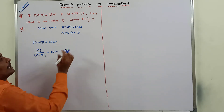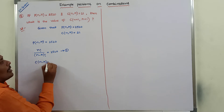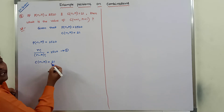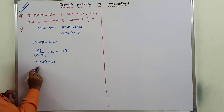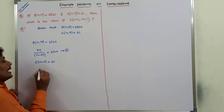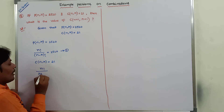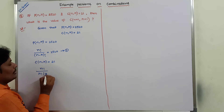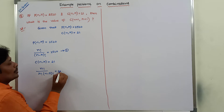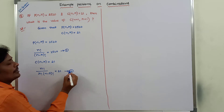Next, C(n, r) is equal to 21. The formula for C(n, r) — that is nCr — is n factorial divided by r factorial into (n minus r) factorial, which equals 21. This is equation 2.